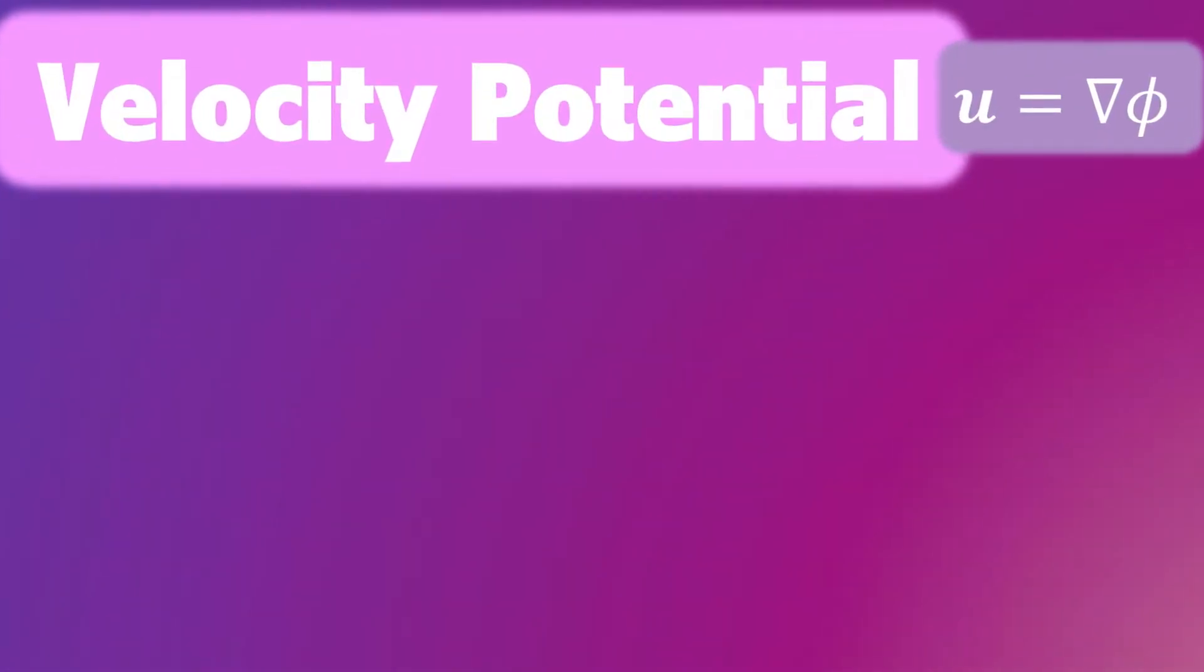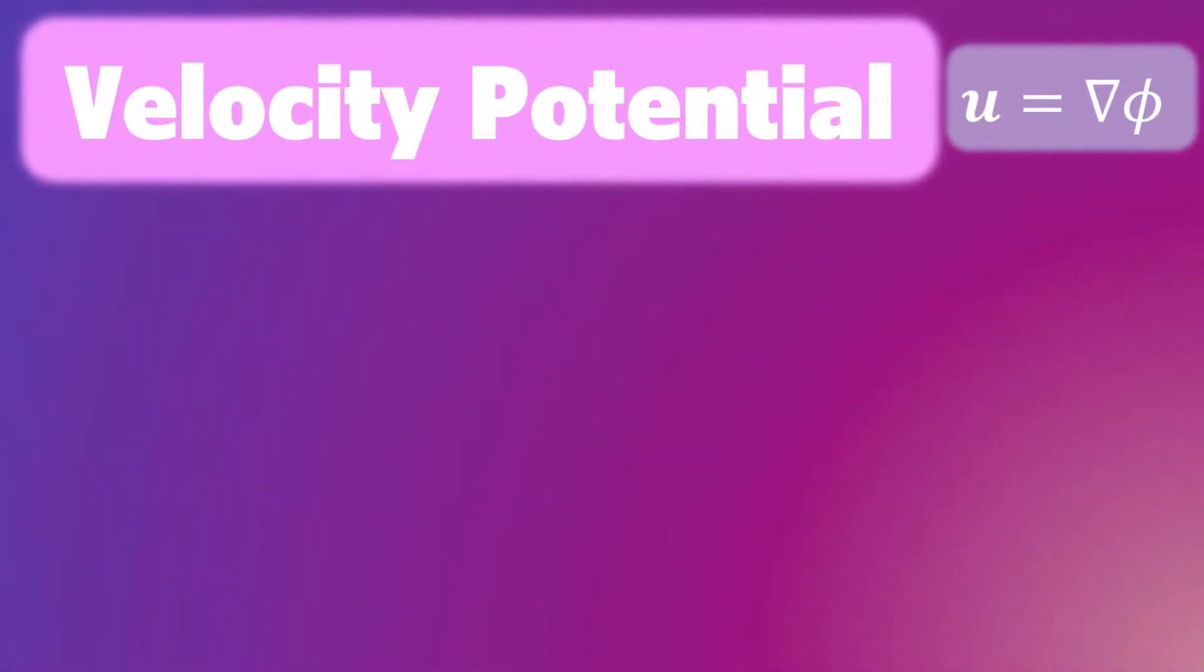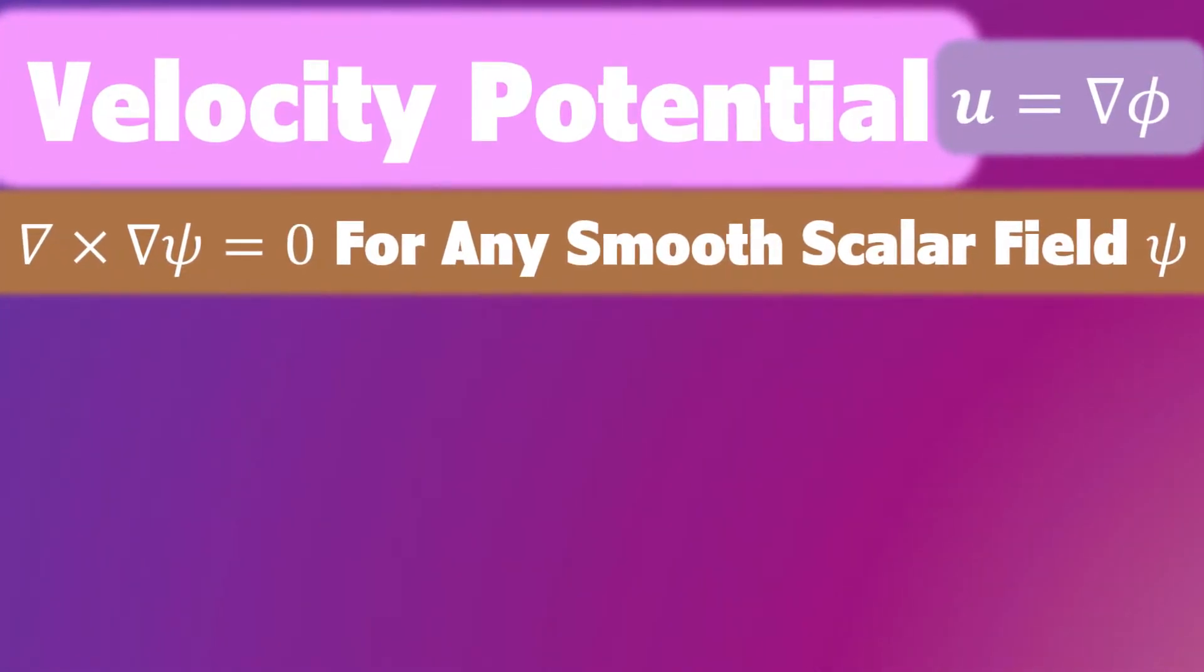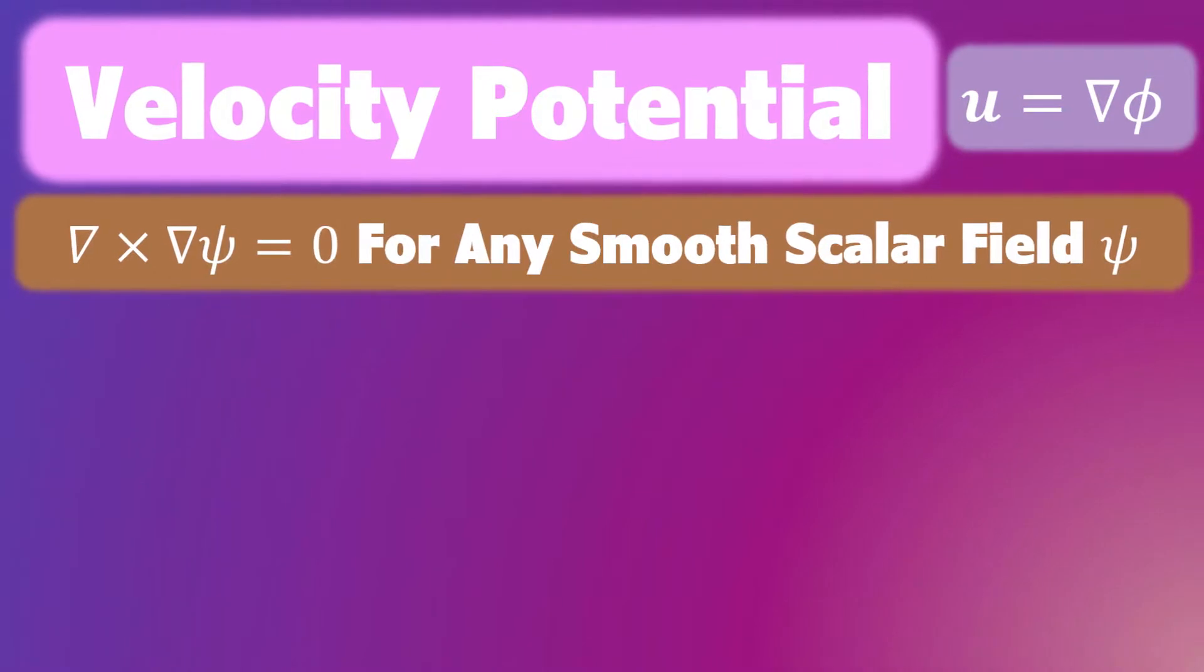we can define a velocity potential phi so that U equals grad phi. This is possible because the curl of grad of psi equals zero for any smooth scalar field psi.